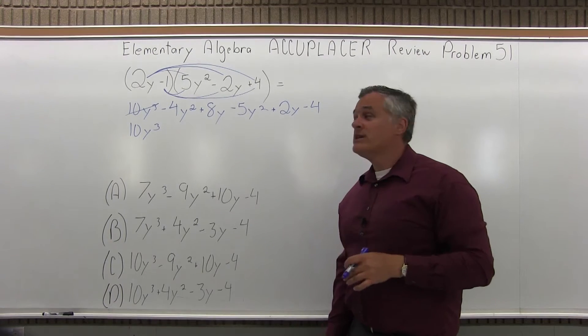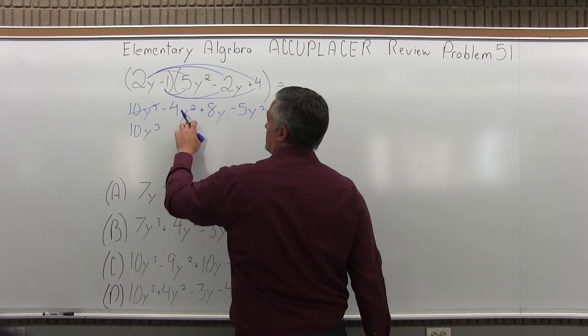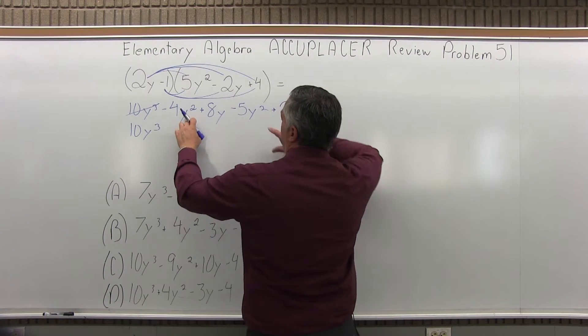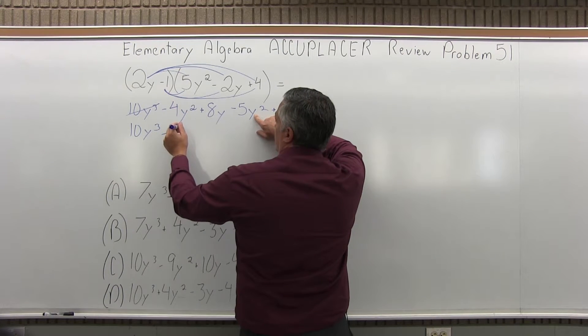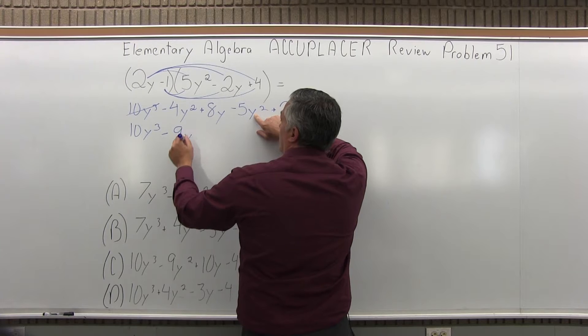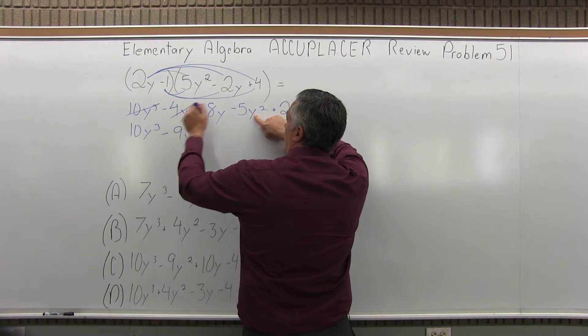The next thing I have are y squares. There's a negative 4y squared and a negative 5y squared. If I put those together, that's negative 9y squared. So now the y squares are done.